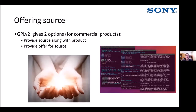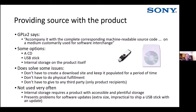You also have to provide source code or an offer for source. The GPL gives two options. One is to provide the actual source code with the product itself — the GPL says 'accompany it with the complete corresponding machine-readable source code on a medium customarily used for software interchange.' Options include physical media like a USB stick or CD-ROM, or putting it on the internal storage of the product. This solves some issues: you don't have to create a download site, keep it populated, or do physical fulfillment. Once it's in the product, it's baked into your product delivery.